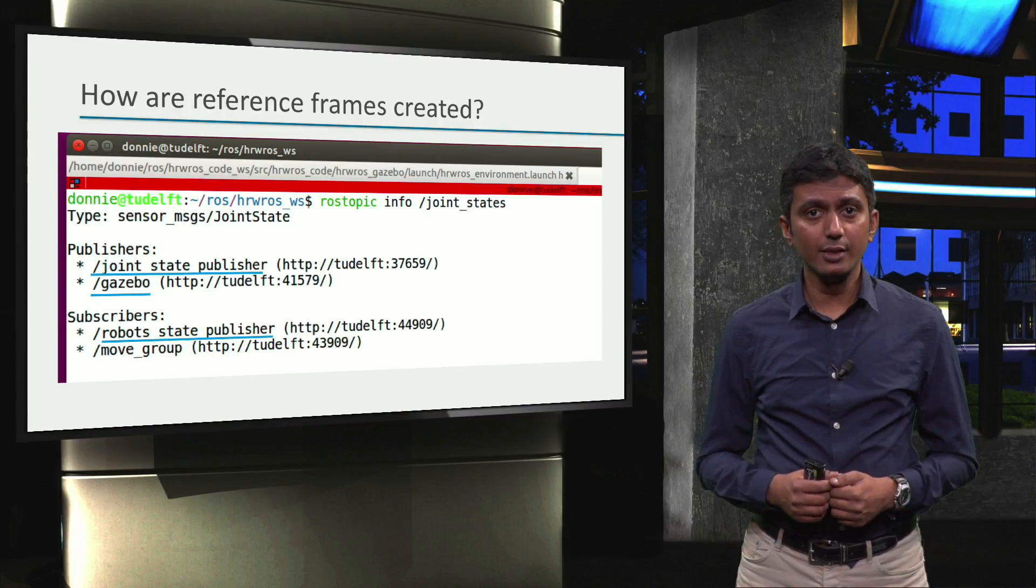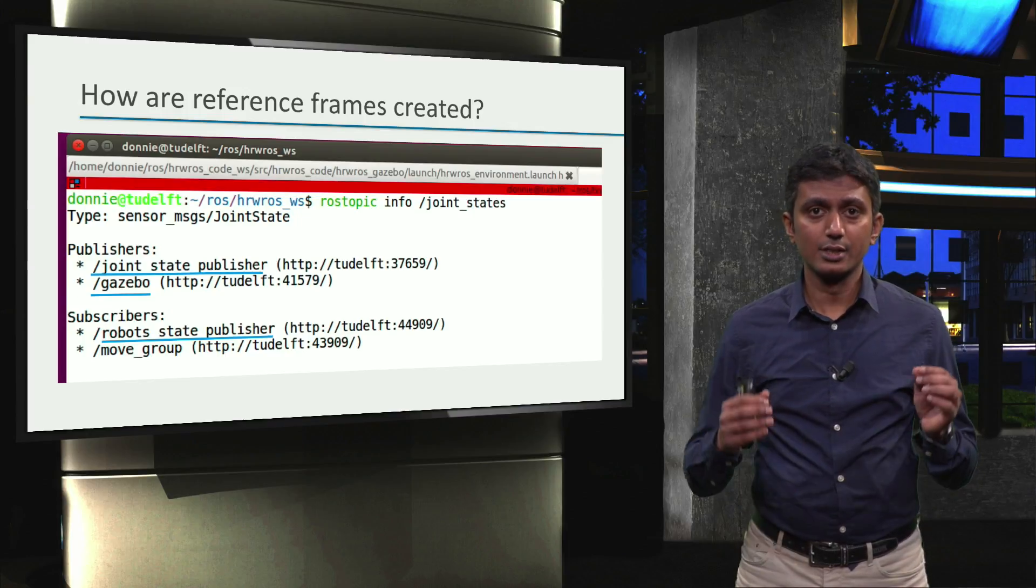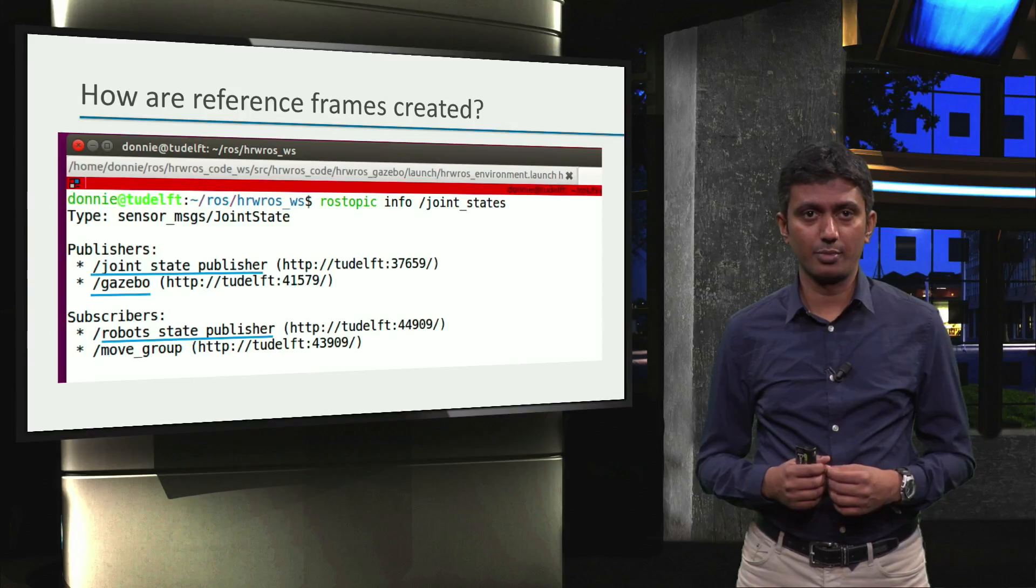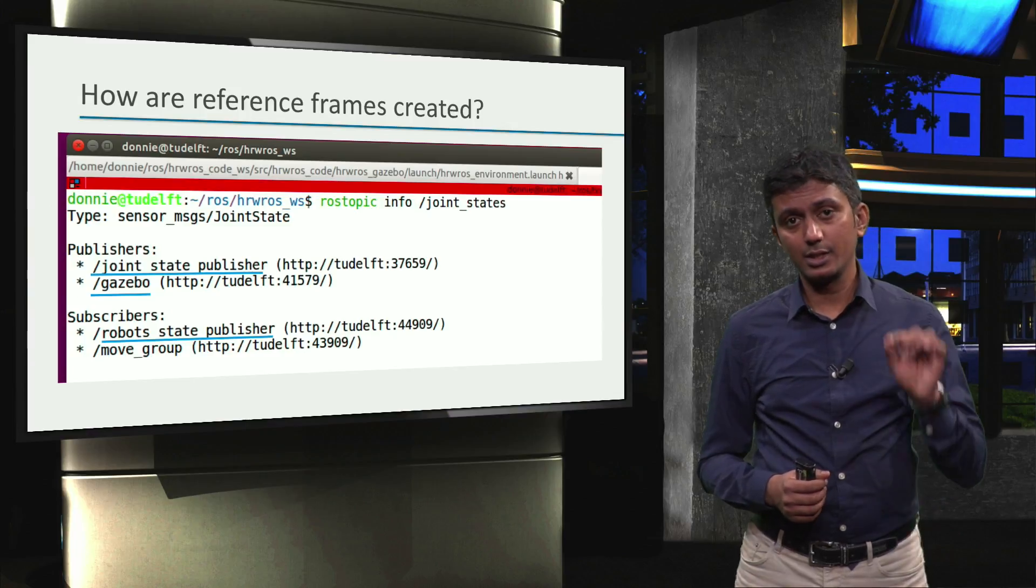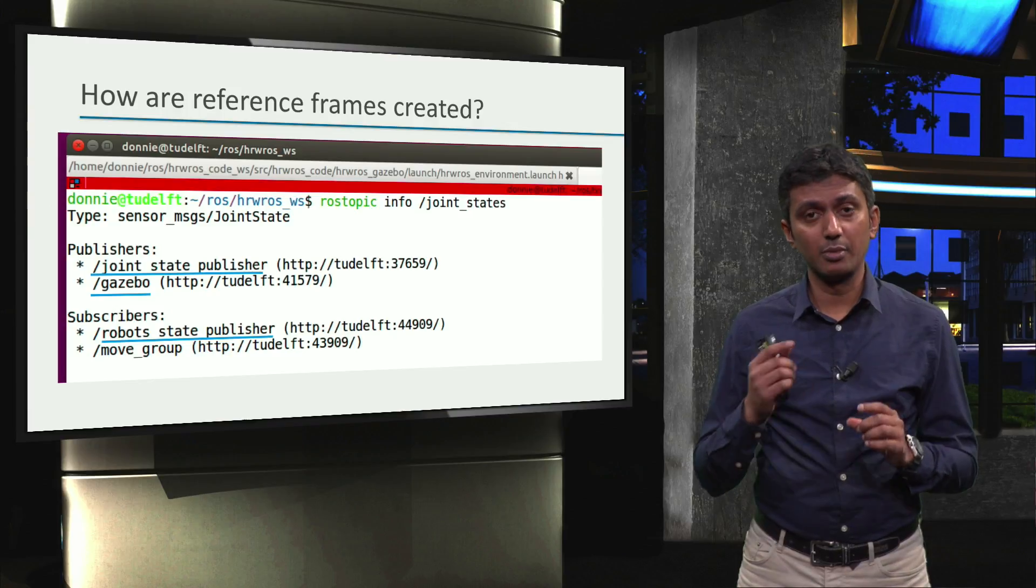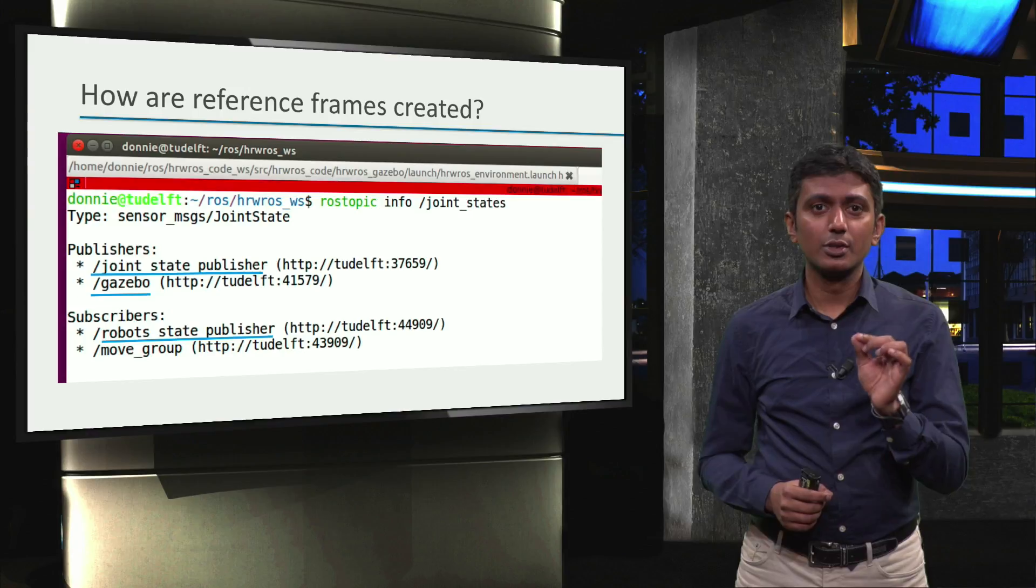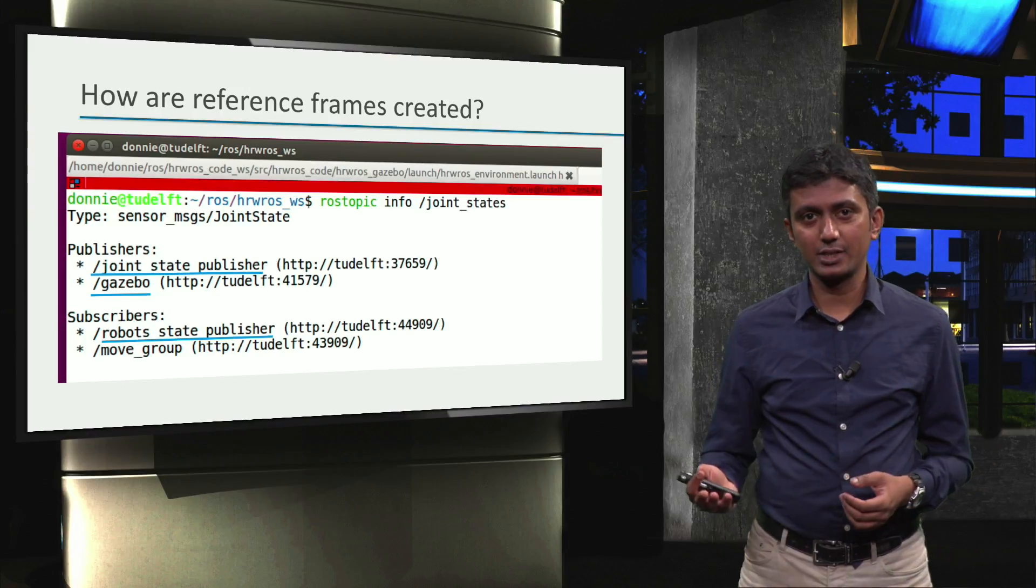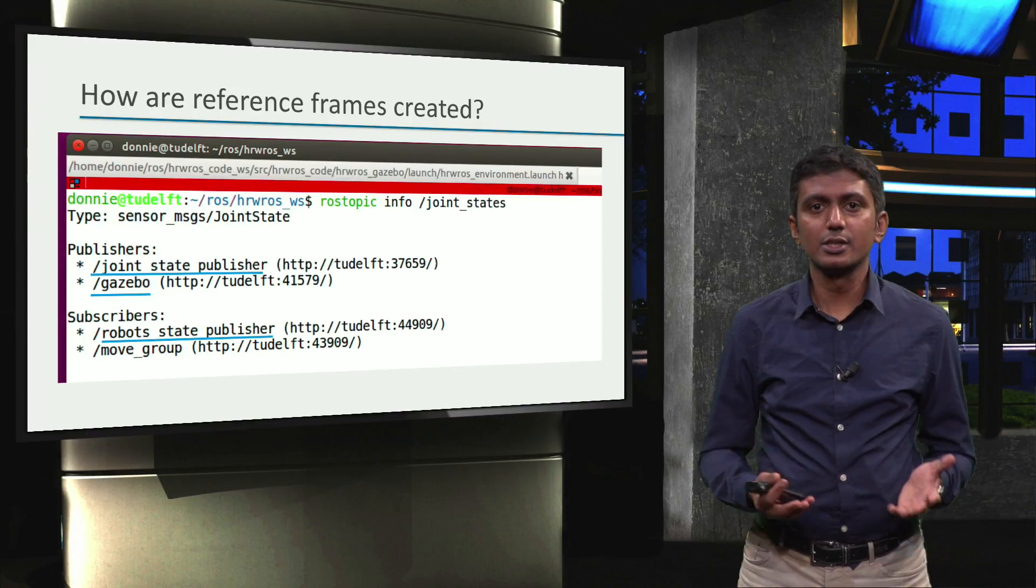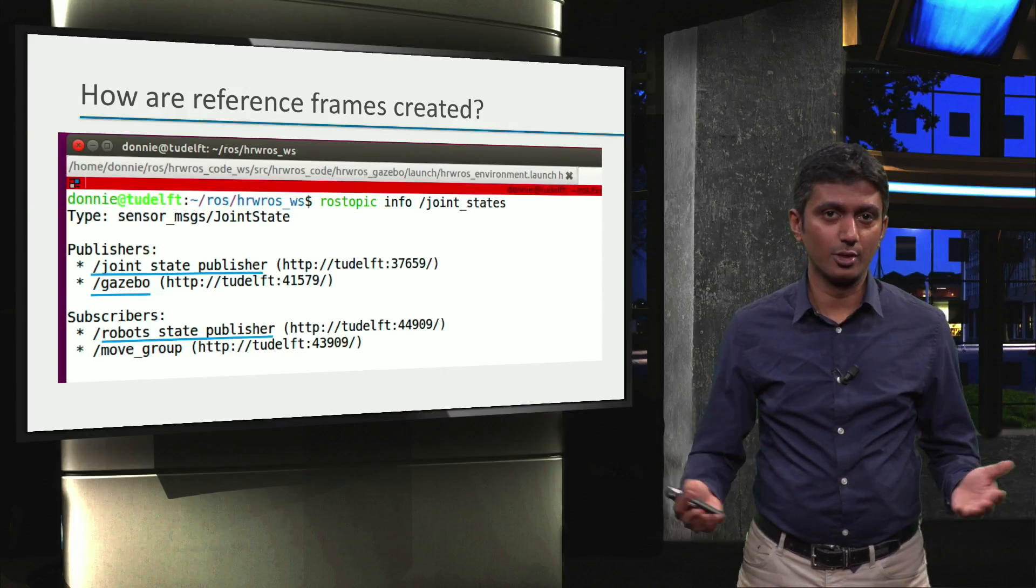Also, we can see that robots_state_publisher node is subscribing to the joint states topic. Remember, this is a node to utilize the functionality provided by the robot state publisher package. Hence, the S is added to distinguish the node name from the package name, and also the fact that this node is publishing all the reference frames for our factory simulation, which involves three robots.